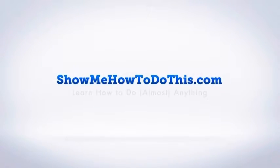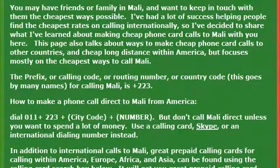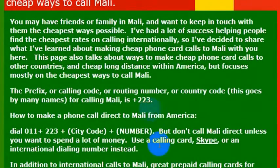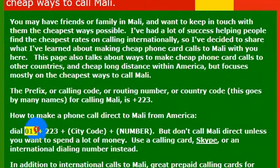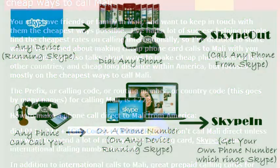To make a phone call to Mali, it's really simple. You just have to know the country code for Mali and then you can dial directly if you want to. So you would dial the country code of 223. To get an outside line from the United States for an international phone call, you would dial 011. You would do this from a landline, as opposed to a cell phone, which has a slightly different setup. So you would do 011, then 223, which is the country code for Mali, and then the phone number that you want to call.